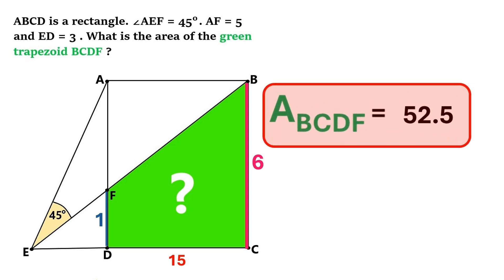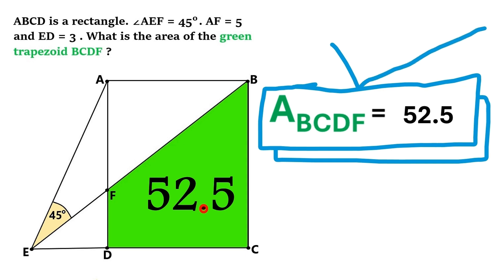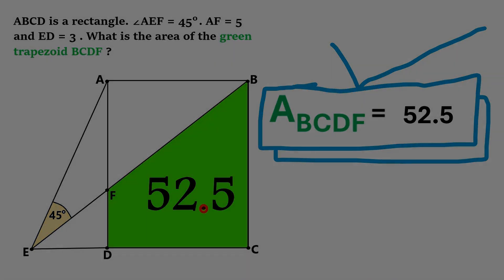Thanks a lot son. You found the area of the green trapezoid. So there we are. The answer to our geometry problem is 52.5. If you enjoyed this video make sure you push the like button. And don't forget to subscribe. Because we are going to solve more math problems and you don't want to miss them. Have a good day and see you soon.